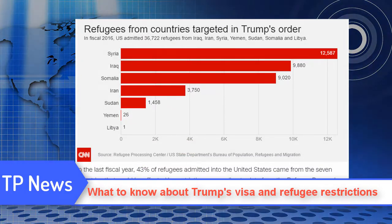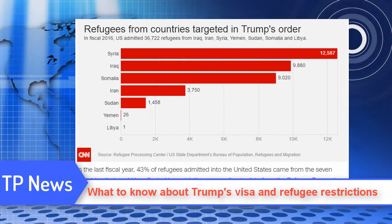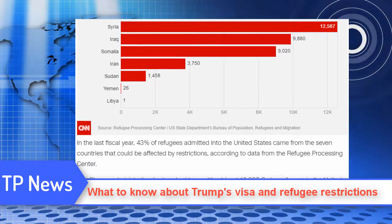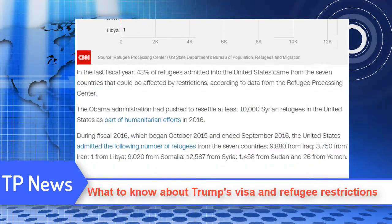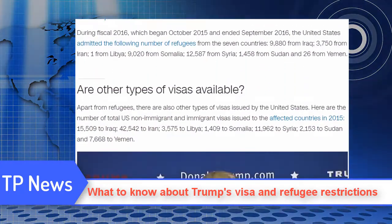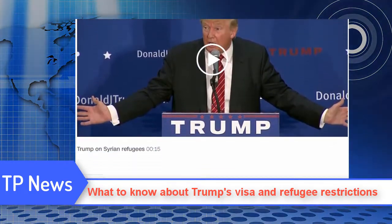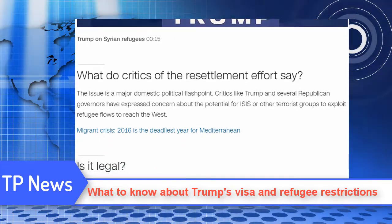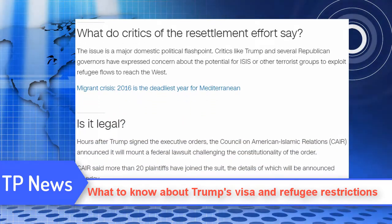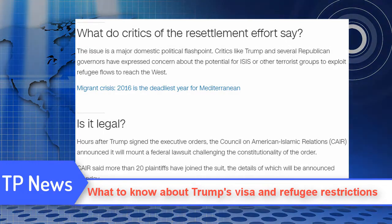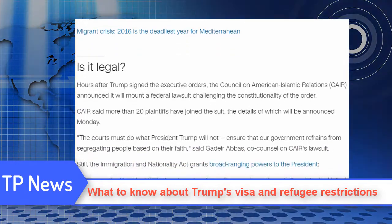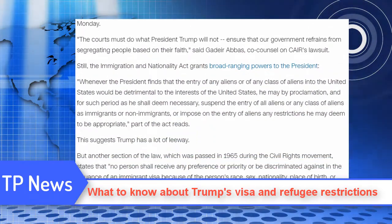Is it legal? Hours after Trump signed the executive orders, the Council on American Islamic Relations (CAIR) announced it will mount a federal lawsuit challenging the constitutionality of the order. CAIR said more than 20 plaintiffs have joined the suit, the details of which will be announced Monday. "The courts must do what President Trump will not — ensure that our government refrains from segregating people based on their faith," said co-counsel on CAIR's lawsuit.